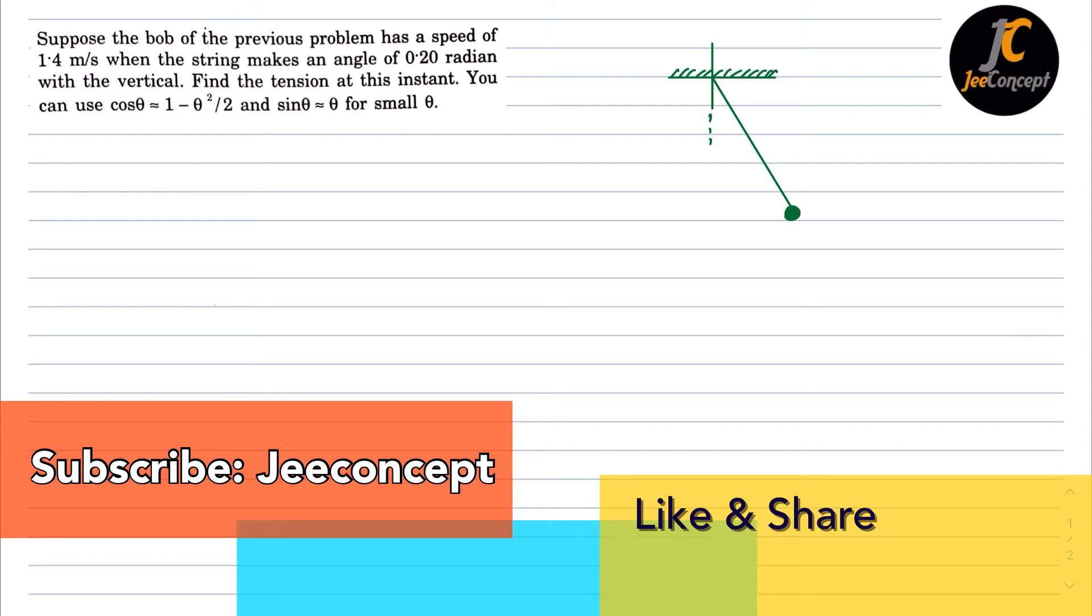Hello everyone. In this problem, suppose the bob of the previous problem has a speed of 1.4 meters per second when the string makes an angle of 0.2 radian with the vertical. Find the tension at this instant.